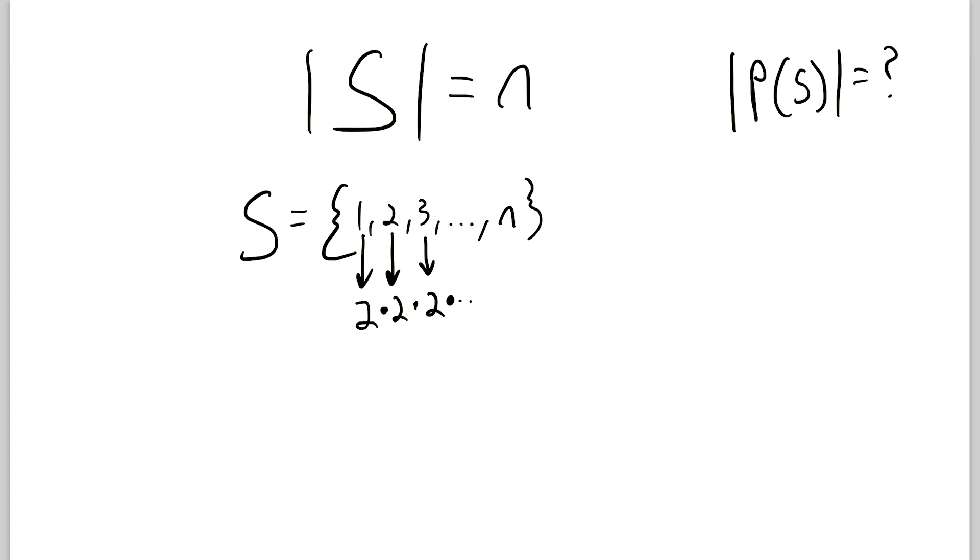So we keep multiplying by 2 all the way up to the element labeled n. Because every subset of S could either contain or not contain every single element in S. So we've just got 2 multiplied by itself a bunch of times. How many times? Well, 1 time, 2 times, 3 times, all the way up to n times, of course. So what it's equal to is 2 to the power of n.